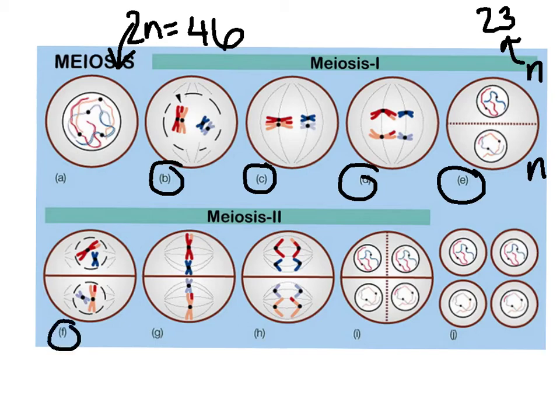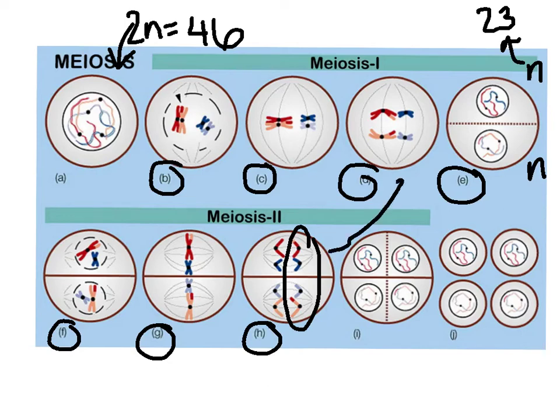Letter F right here, that is prophase II. Letter G is metaphase II. Letter H is anaphase II. Here we can see that the sister chromatids are actually being separated from each other, which is a big difference from over here, where our homologous pairs were being separated from each other.